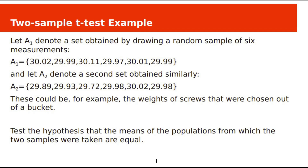Let's look at an example. We discussed two example problems in the equal-variance two-sample t-test. Here I am taking the same example with the assumption that population variances are unequal. Let A1 and A2 be two samples of bytes of screws chosen from a bucket. We need to test the hypothesis that the means of the populations from which the two samples were taken are equal.